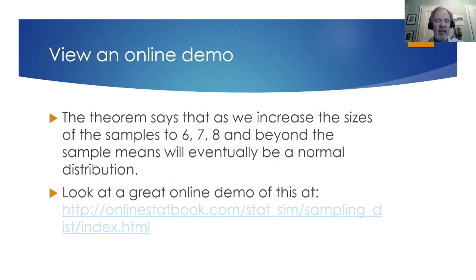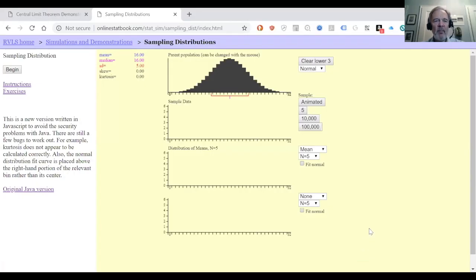Let's look at a great online demo of this at onlinestatbook.com. And here's onlinestatbook.com, and we've got a sample normal distribution, so let's mess that up and make it one that's clearly not a normal distribution. I'll pull some of these down. And now we have something that looks maybe a little bimodal, maybe a bit skewed on one side. So that's obviously not a normal distribution because it's not symmetric about the mean.